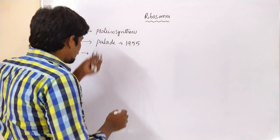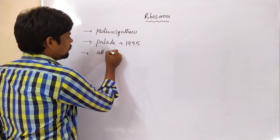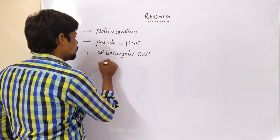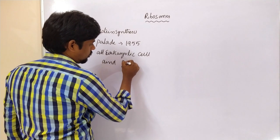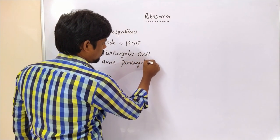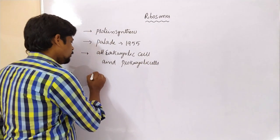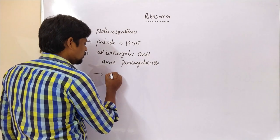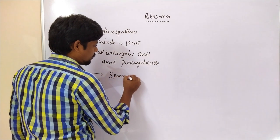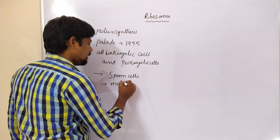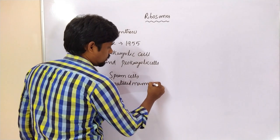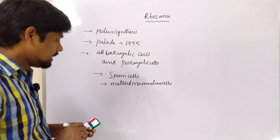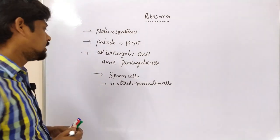These ribosomes are actually present in all eukaryotic cells and prokaryotic cells. Very few exceptions include cells where ribosomes are not present — these include sperm cells and also matured mammalian red blood cells.